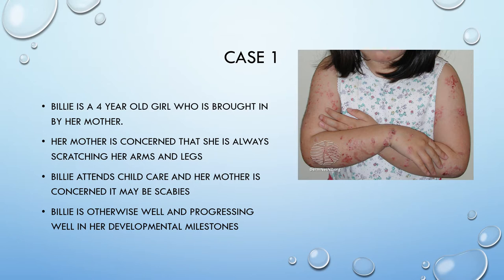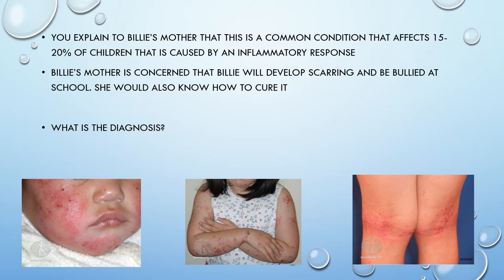Case one. Billie is a four-year-old girl who is brought in by her mother. Her mother is concerned that she's always scratching her arms and legs. Billie attends childcare and her mother is concerned that it may be scabies. Billie is otherwise well and progressing well in her developmental milestones. As you can see from the picture, the distribution of the rash is mostly on her extensor surfaces, and you might be able to see evidence of excoriation. You explain to Billie's mother that this is a common condition affecting 15-20% of children, caused by an inflammatory response. Billie's mother would like to know how to cure this, so think about what the diagnosis could be.